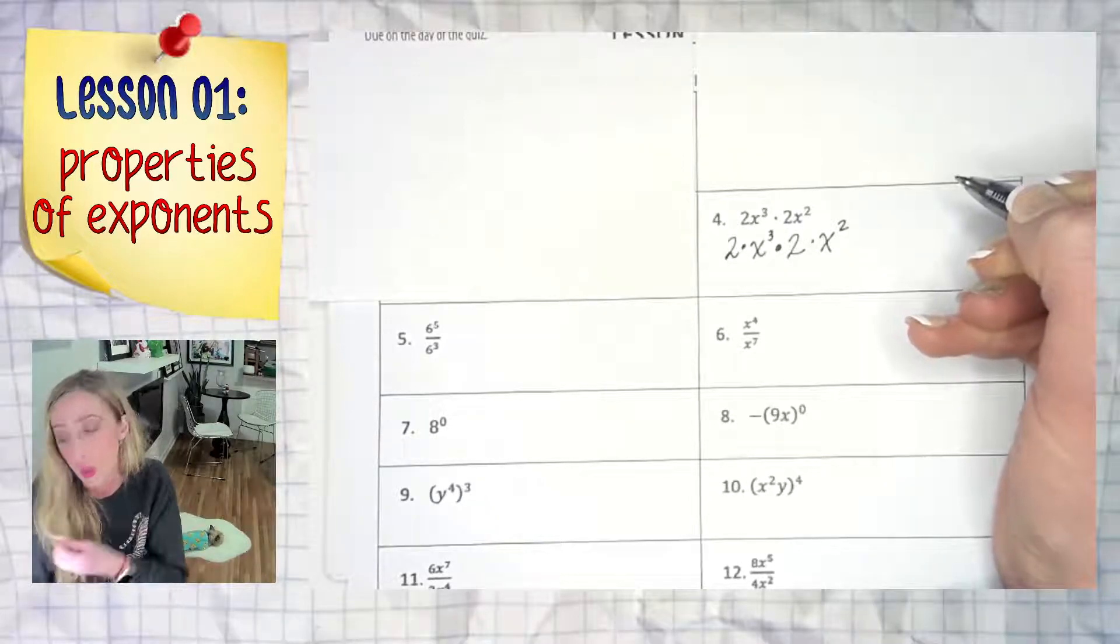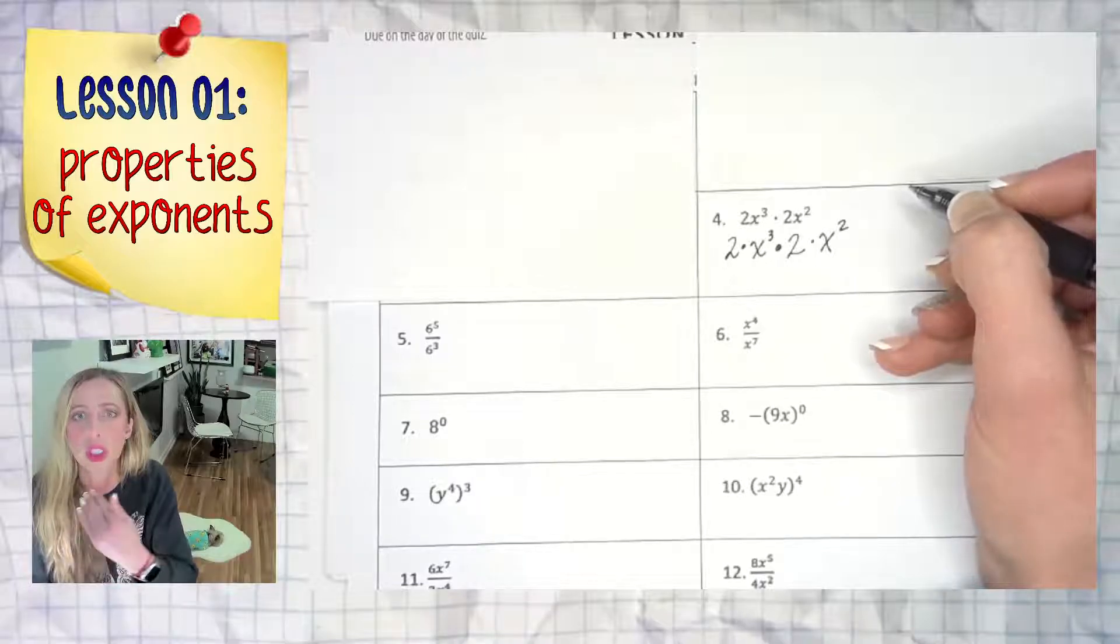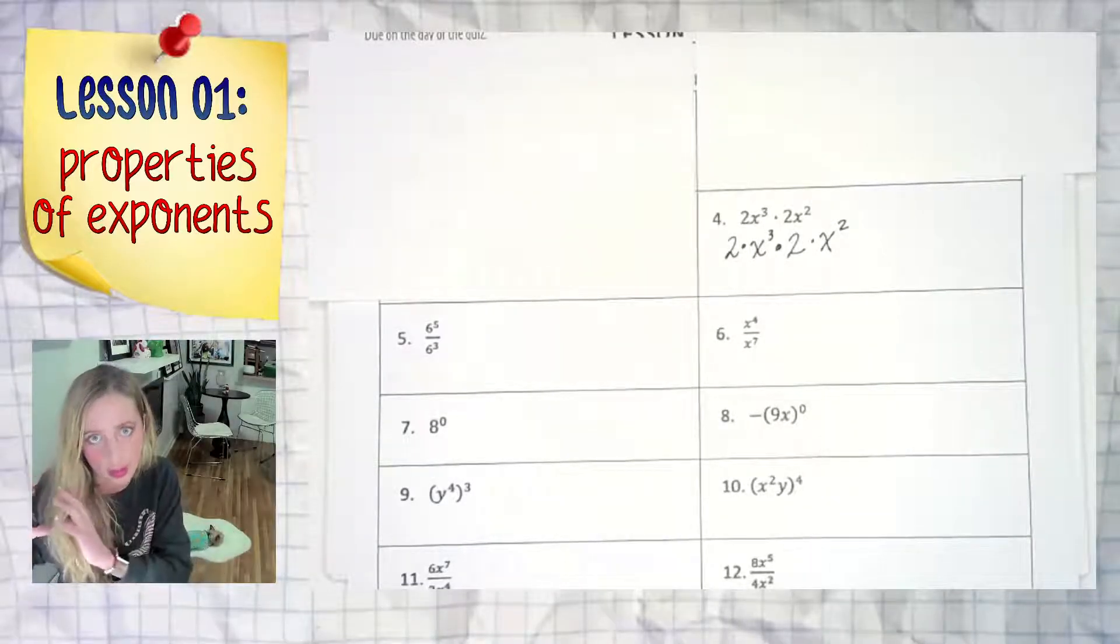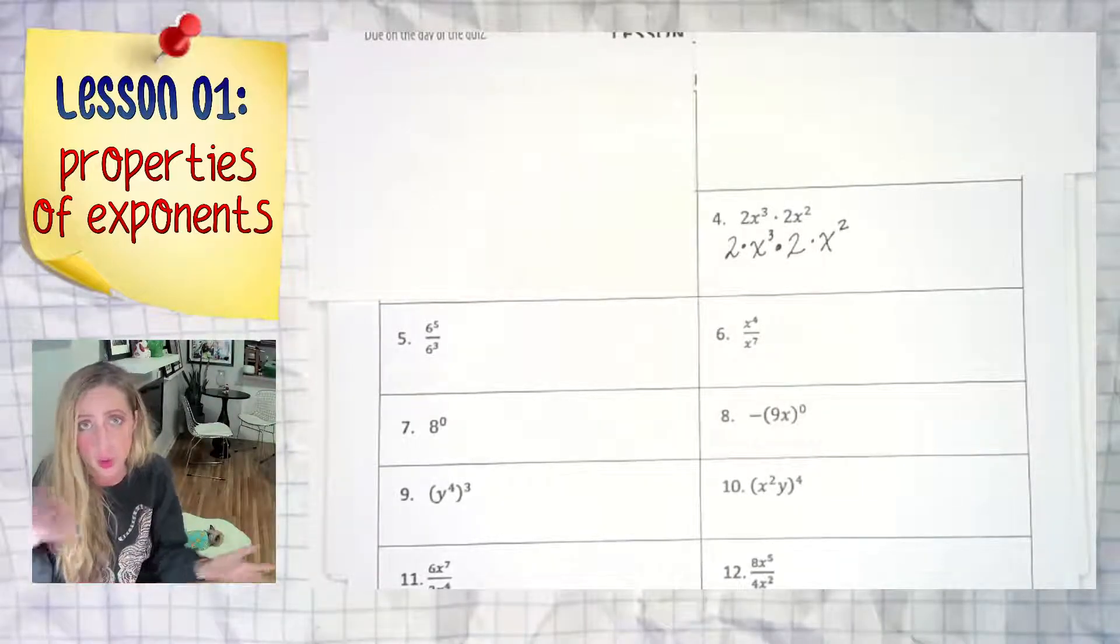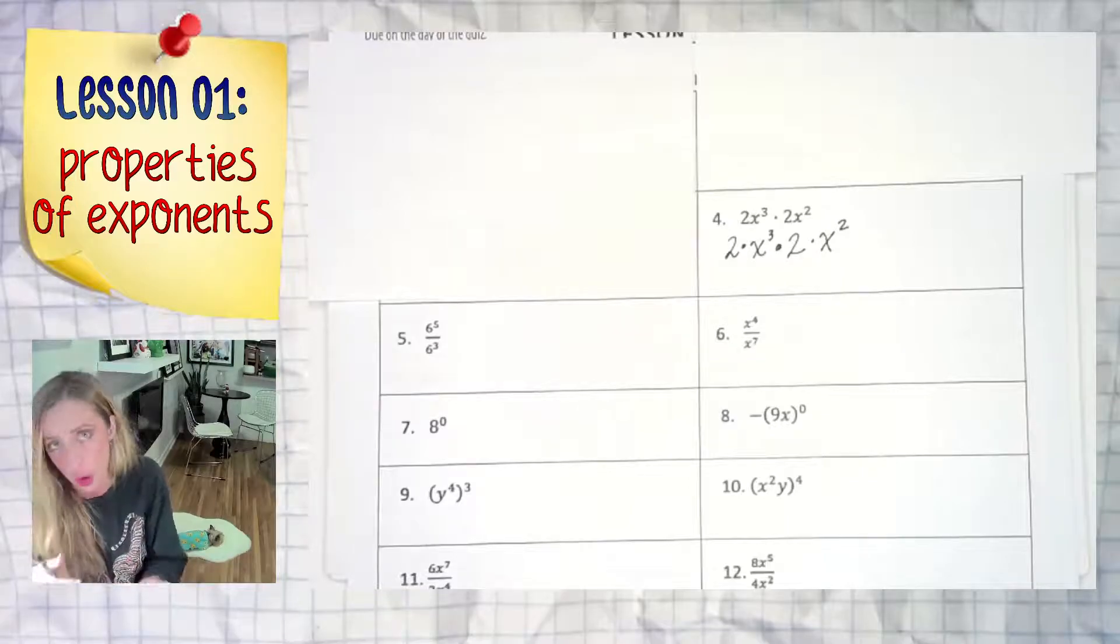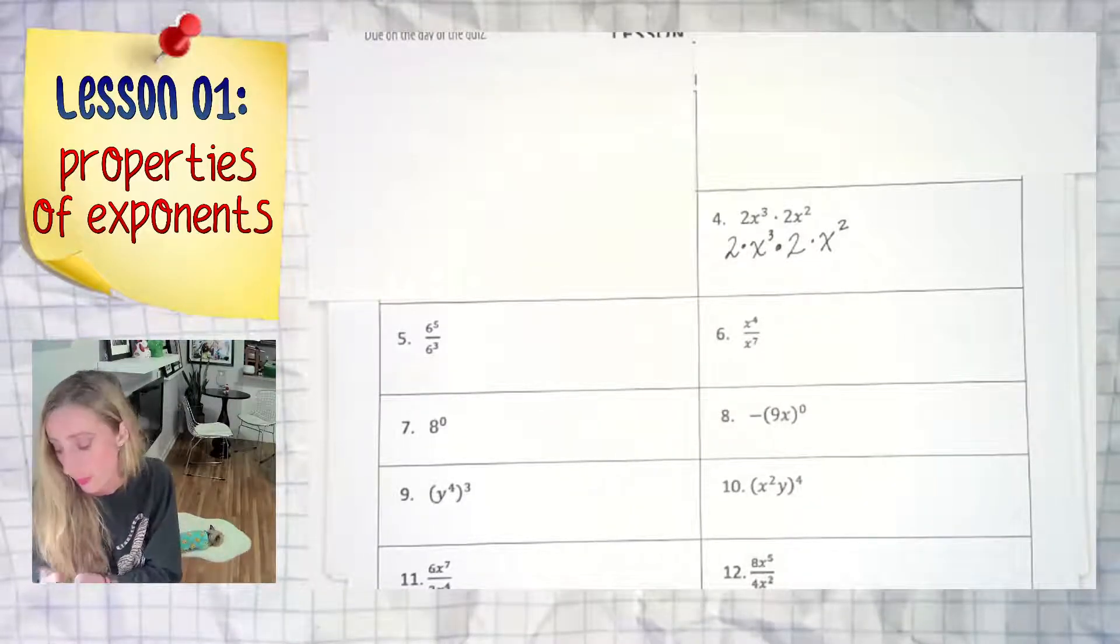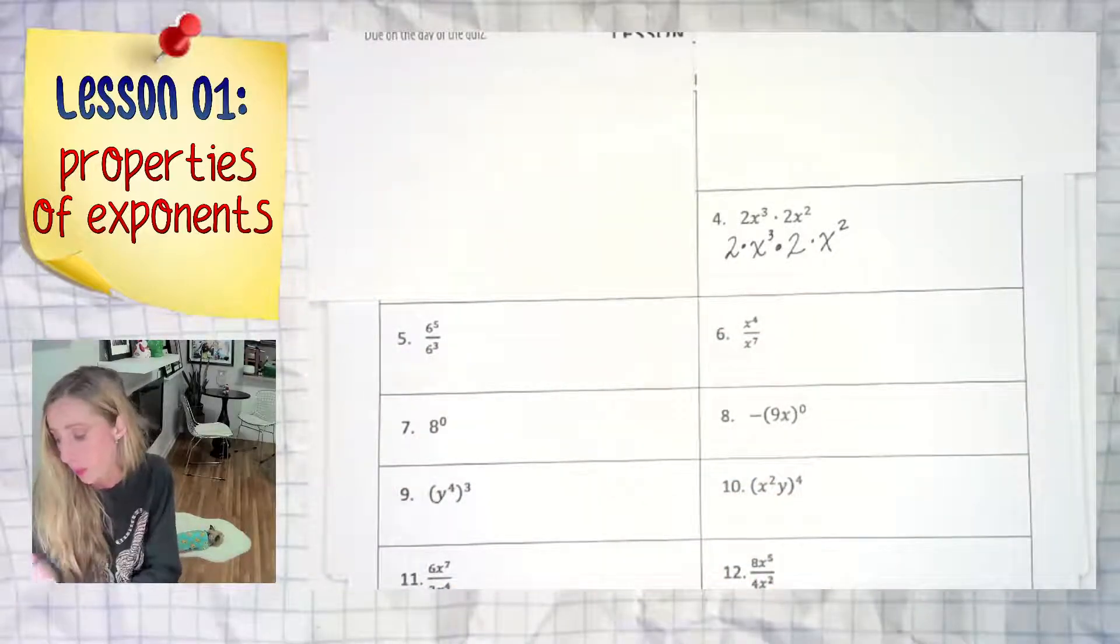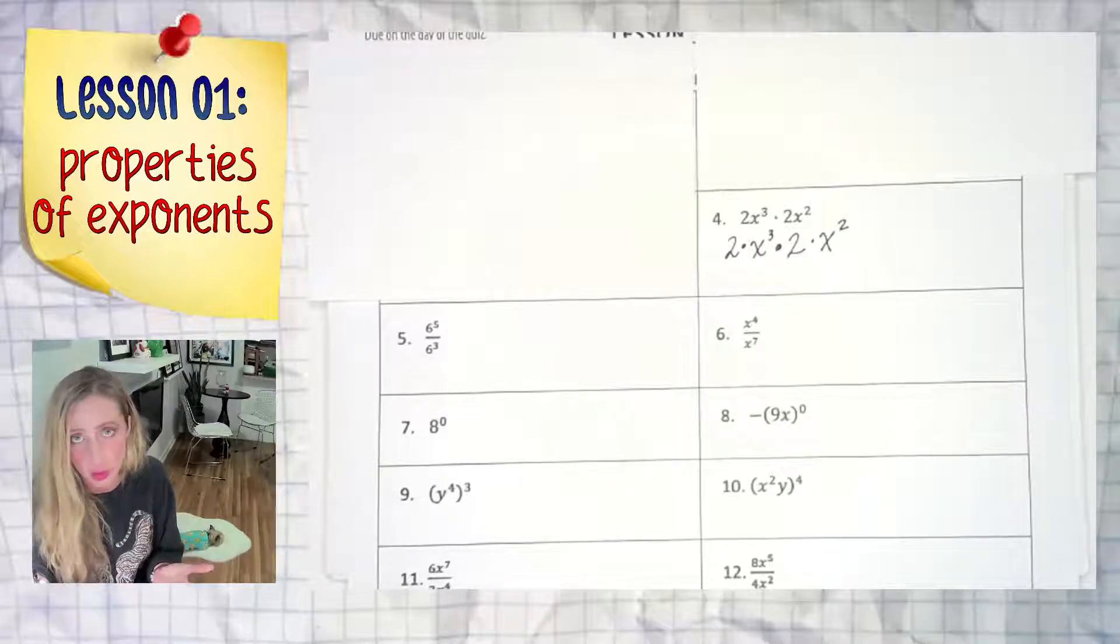Please don't think or use the word distribution or distribute for an example like this. Distribution is when we have a sum or a difference in parentheses and then multiplication, or I guess it could be division because dividing is multiplying by the reciprocal of that value. That's distribution. This is not distribution. This is multiplication. We might do a little rearranging and that's all there is to it.